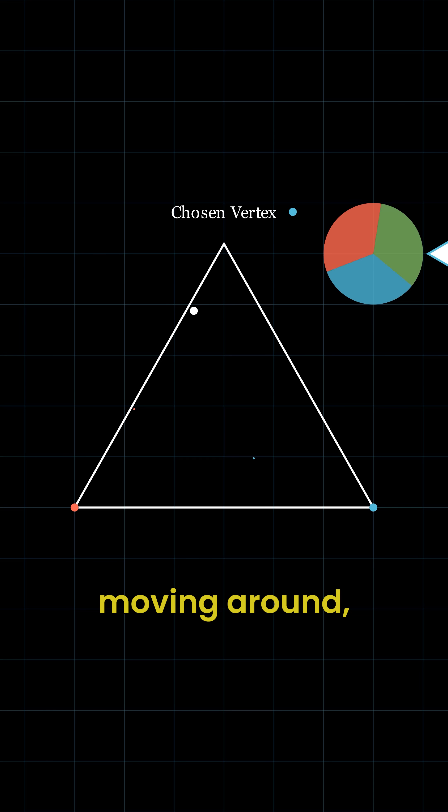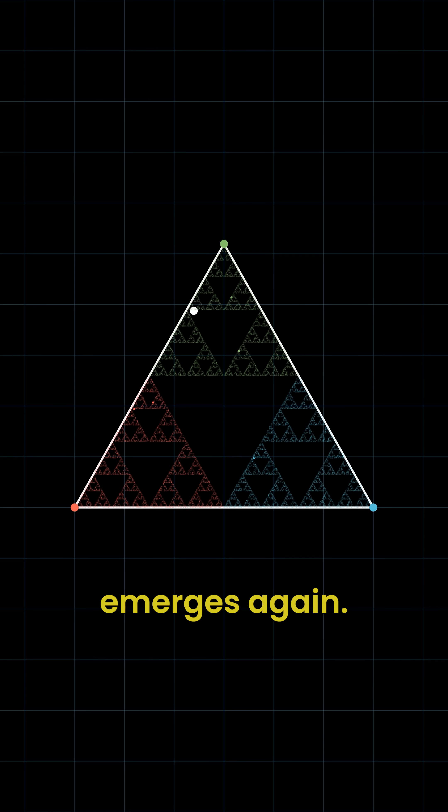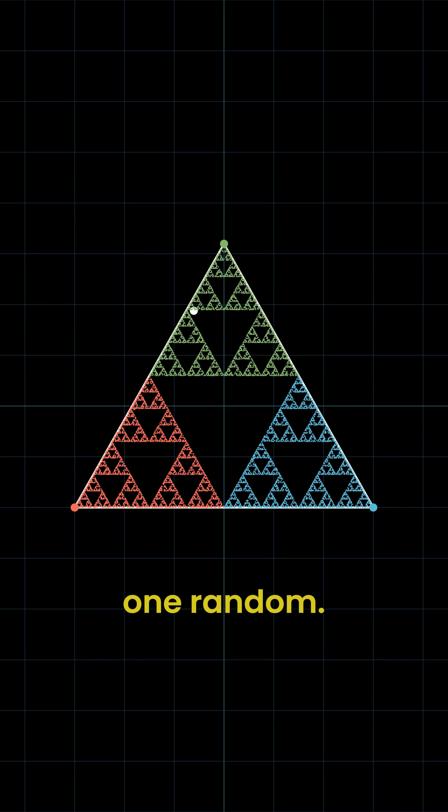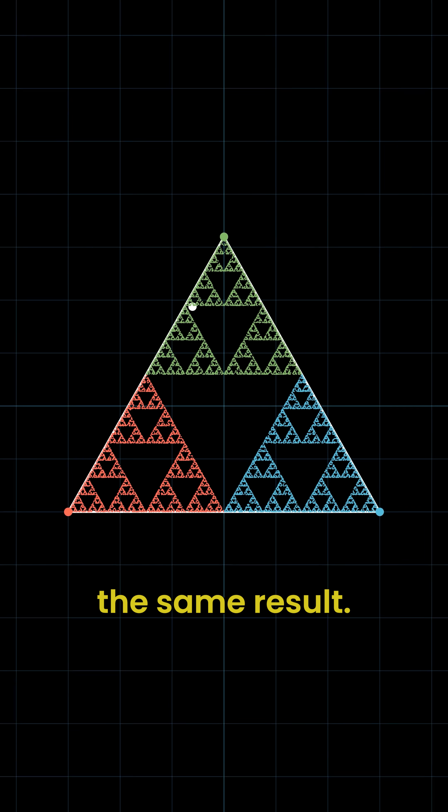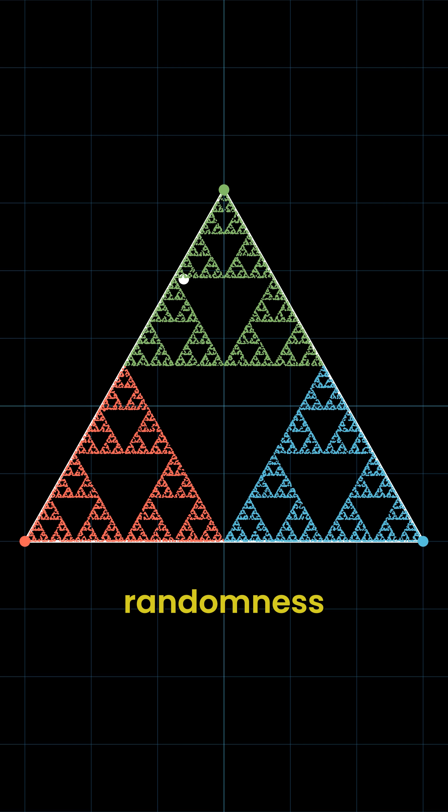At first it looks random, just dots moving around, but slowly a pattern appears. The Sierpinski Triangle emerges again. Two methods, one precise, one random, both led to the same result. Why does this happen? How does the randomness create order?